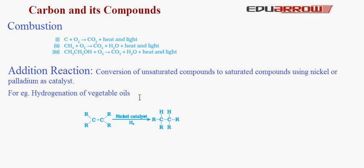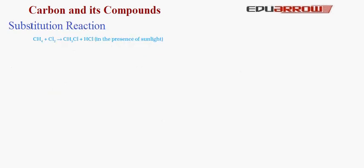Now let us talk about substitution reaction. Saturated compounds are generally inert, but when they are placed in sunlight the hydrogen in them is replaced by atoms like chlorine and bromine. For example, from methane, hydrogen is replaced to form CH₃Cl and HCl is produced. Similarly in all saturated compounds when kept in sunlight, hydrogen is substituted by atoms like chlorine or bromine. This reaction is known as substitution reaction.